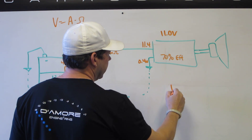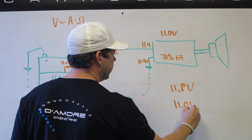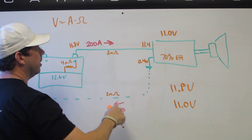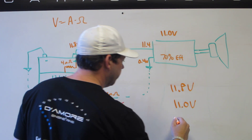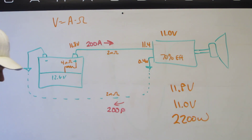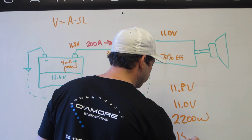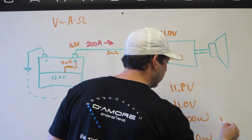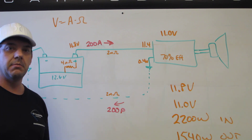So at the battery terminals: 11.8 volts; at the amplifier terminals: 11.0 volts. Input power to the amp is volts times amps: 11 volts times 200 amps equals 2,200 watts. The amplifier is 70% efficient, so 2,200 times 70% equals 1,540 watts of output. And there's the solution for video 3's homework problem.